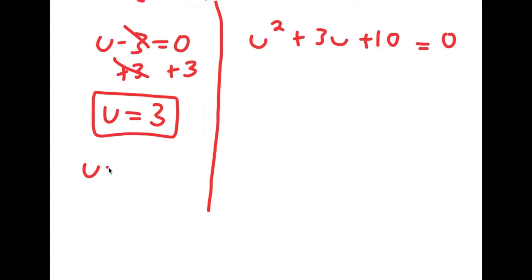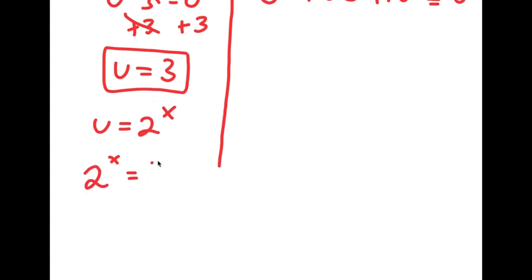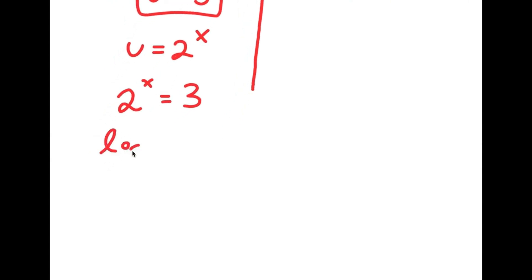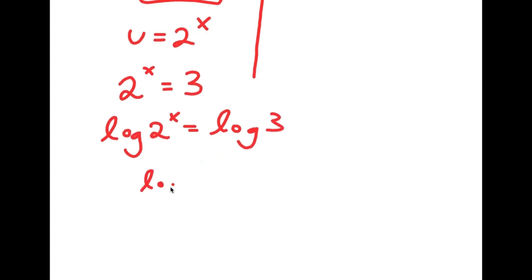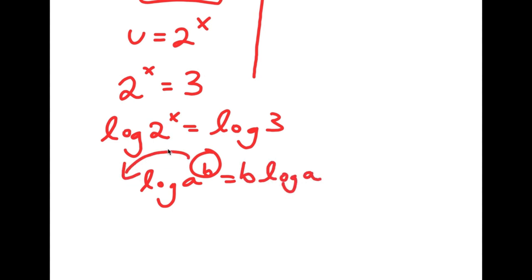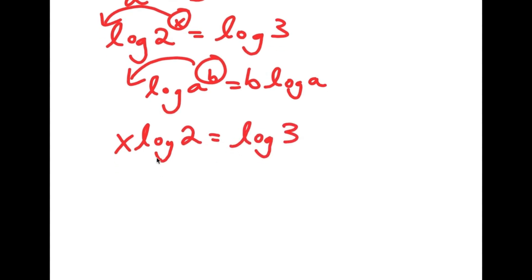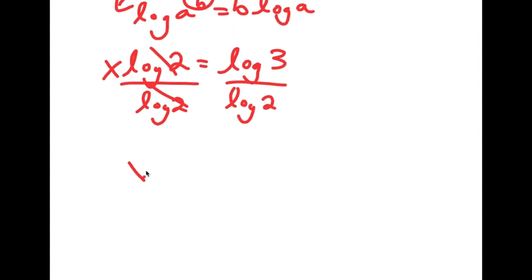Remember, we let u equal 2 to the power of x, meaning 2 to the power of x is equal to 3. To solve this, I take the log on both sides: log 2 to the power of x equals log 3. Using the power rule, I move x to the front: x times log 2 equals log 3. Dividing both sides by log 2, I get x is equal to log 3 over log 2.